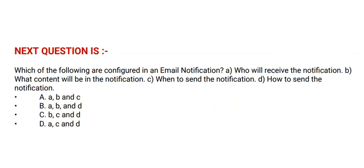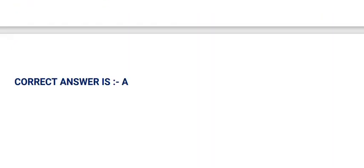Next question is: which of the following are configured in an email notification? Option A: who will receive the notification. Option B: what content will be in the notification. Option C: when to send the notification. Option D: how to send the notification. Answer options — Option A: A, B and C. Option B: A, B and D. Option C: B, C and D. Option D: A, C and D. And the correct answer is option A.